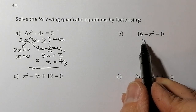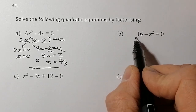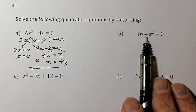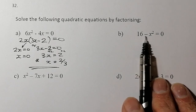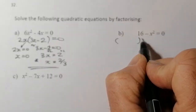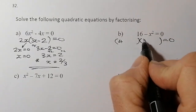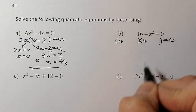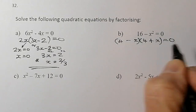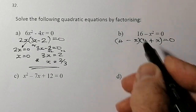For the next one, I first check for a common factor — nothing there. With only two terms and a negative sign between them, I recognize it as a difference of squares. A difference of squares goes into two brackets: the square root of 16 is 4, and the square root of x² is x, so I get (4 − x)(4 + x). You can verify by expanding back out.